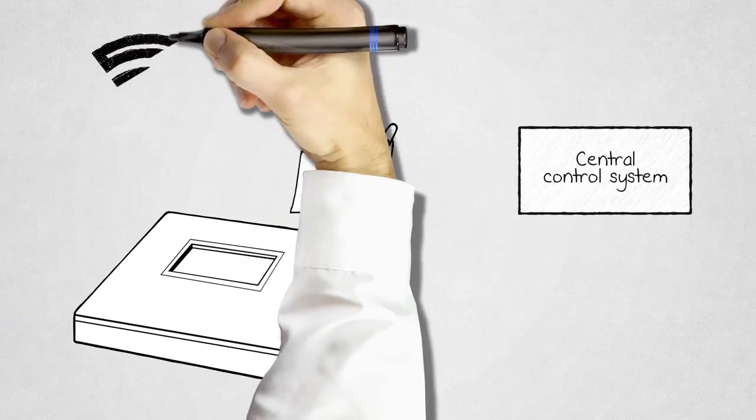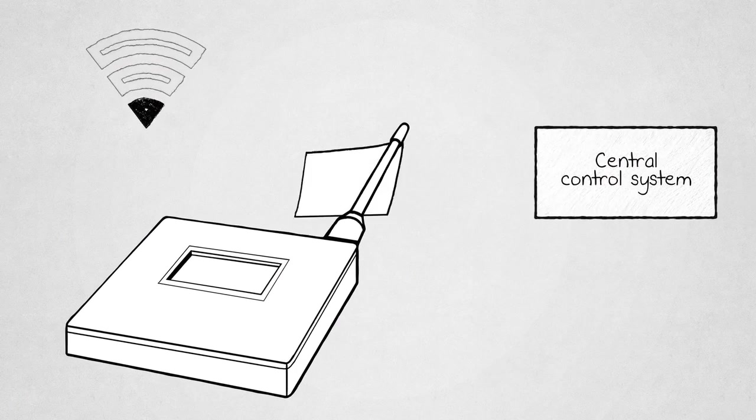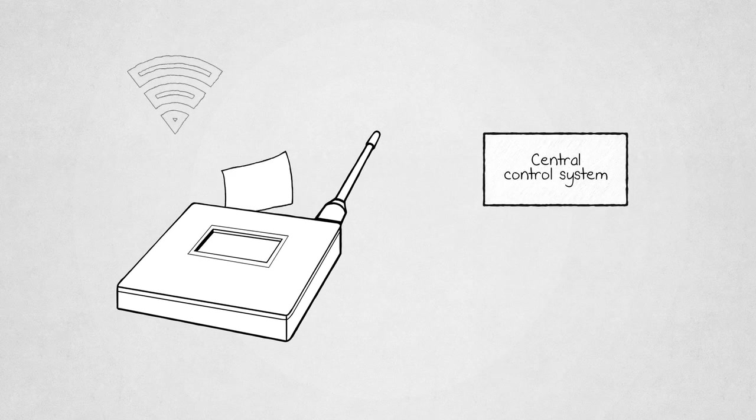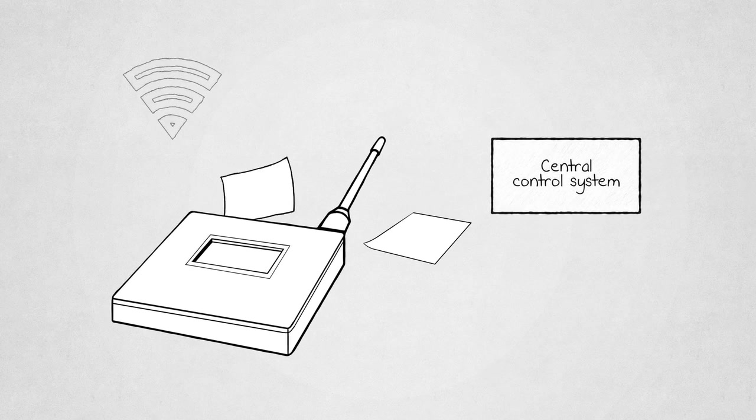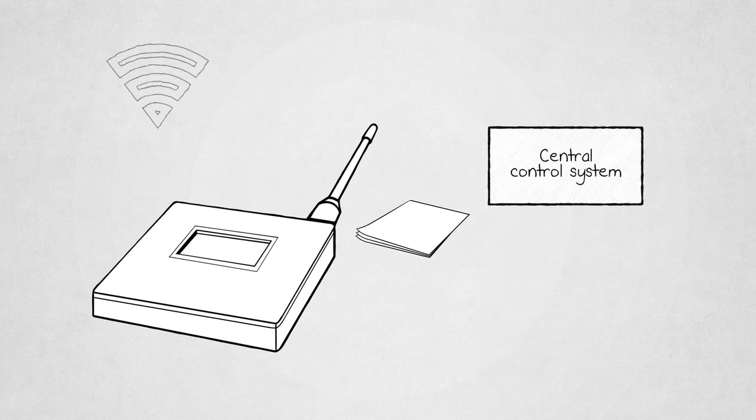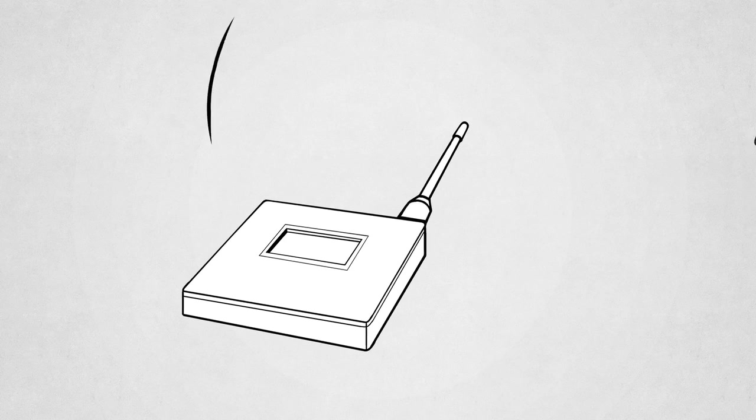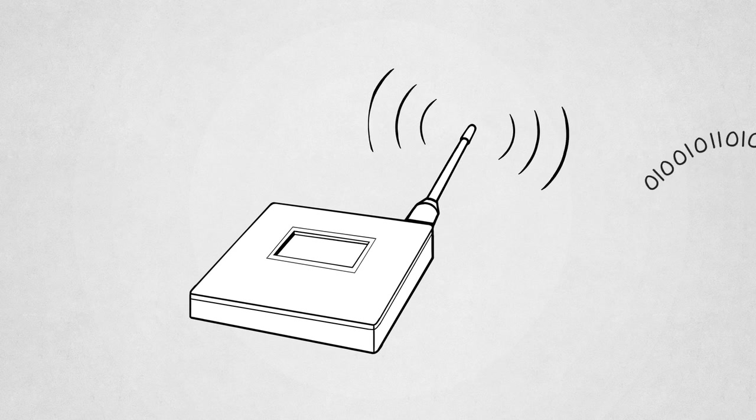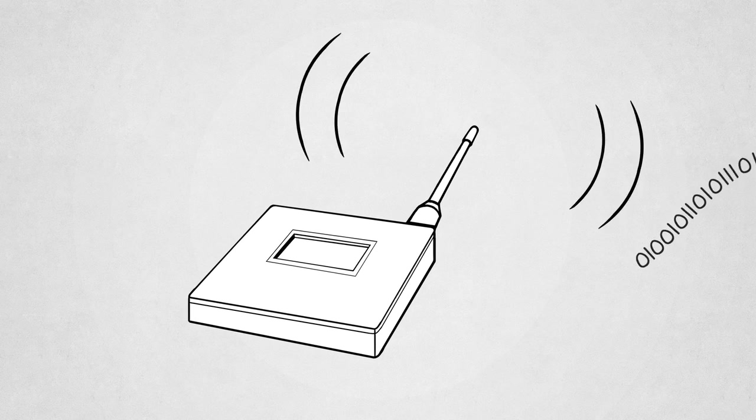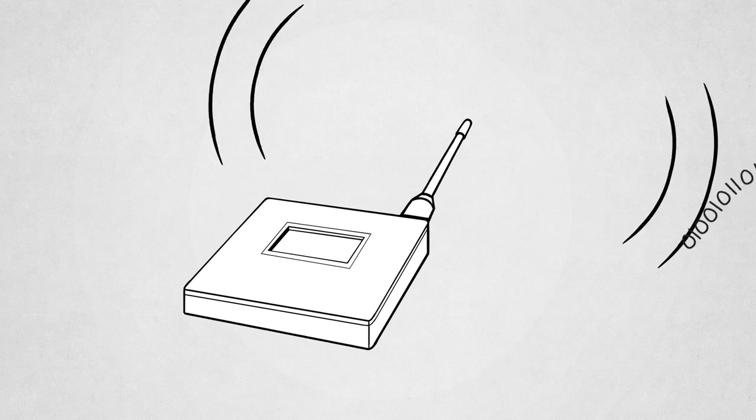There's also the added peace of mind knowing that your data won't be lost if your signal fails. In the event of a communications dropout, data is automatically backfilled once the signal is restored. When it comes to software updating, the ABB Aquamaster 3 with WITS can be remotely upgraded using its over-the-air programming feature.